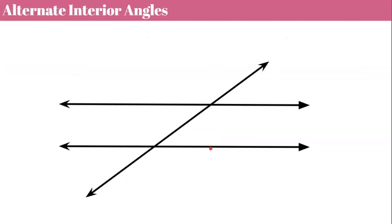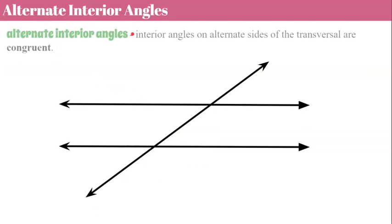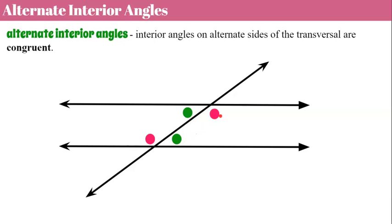Alternate interior angles are interior angles on alternate sides of the transversal, and they are congruent. So inside — interior angles — and on alternate sides of that transversal. This one's on the left, this one's on the right, so alternate interior angles are congruent. Then we have another pair: alternate, on the right, inside — interior — and on alternate sides. So alternate sides, interior angles.